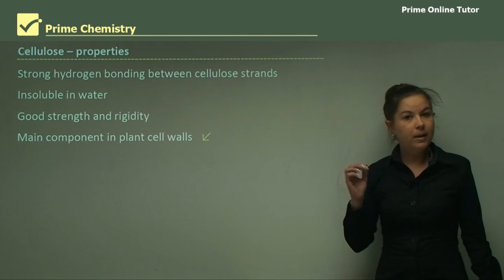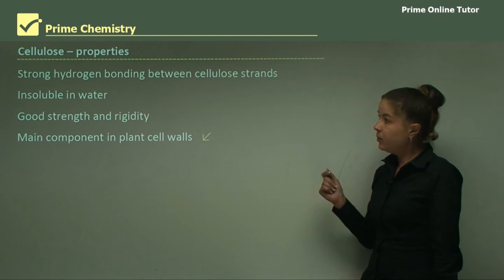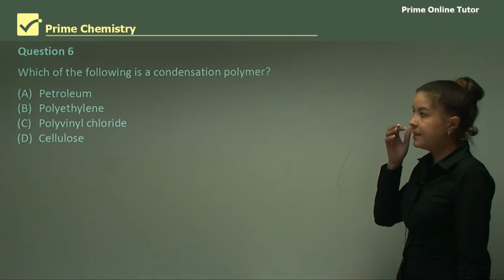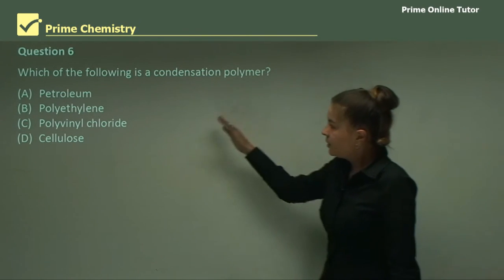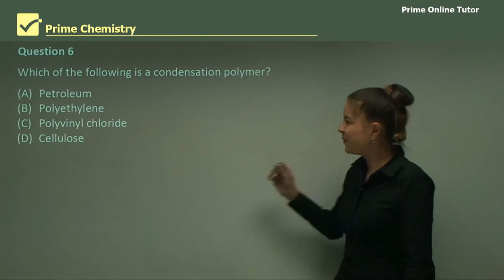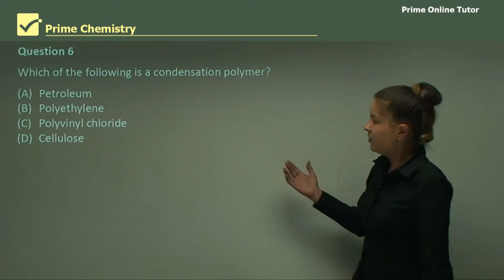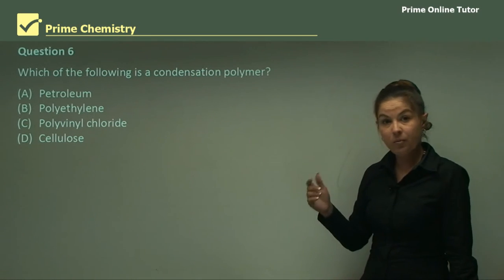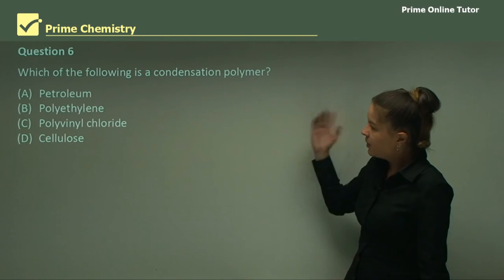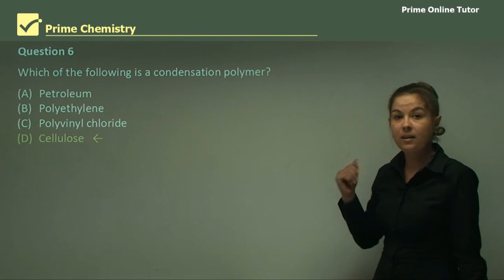That wraps up my talk about cellulose and condensation polymerization. And now we'll look at some questions. So question six, which of the following is a condensation polymer? Let's just have a think. Petroleum, well, petroleum is petroleum. So we can rule that one out straight away. Polyethylene is an addition polymer from petrochemicals. So that one's a no. PVC, if you'll remember, is also from petrochemicals and it's an addition polymer. So which one is a condensation polymer? Through process of elimination and through what we learned today, the answer is cellulose.